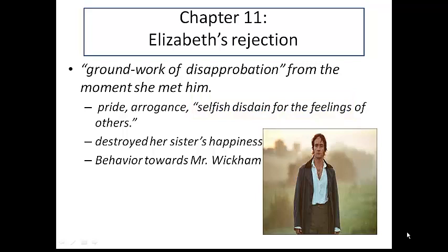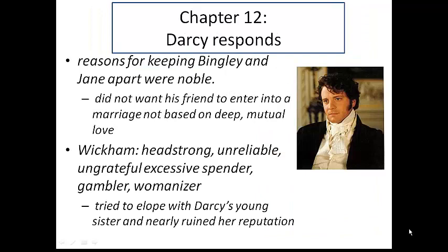When Elizabeth further states that she could never accept a marriage offer from a man who destroyed her sister's happiness, she shows her family loyalty. Elizabeth also dislikes Mr. Darcy due to the unkind behavior he had shown to Mr. Wickham. She cannot forgive his refusal to grant Mr. Wickham the living that the late Mr. Darcy had intended for him. So Elizabeth tries to rationalize her answer by showing she's taking the higher moral ground.